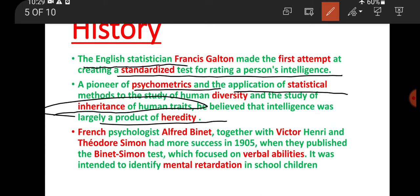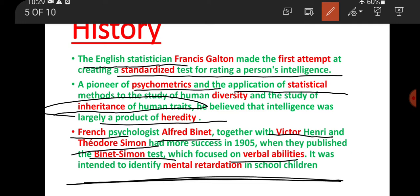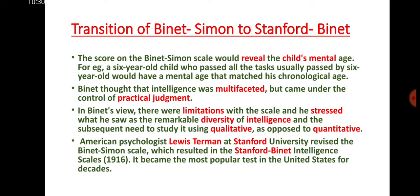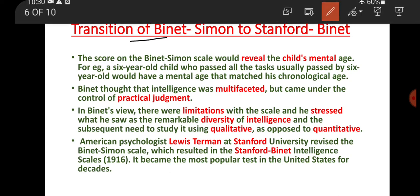Later, Alfred Binet, a French psychologist who worked with Victor Henri and Theodore Simon, published the Binet-Simon test in 1904. This test focused on verbal abilities, which Binet believed could be used to assess intelligence. The test was mainly designed to identify mental retardation so that children could receive extra care.